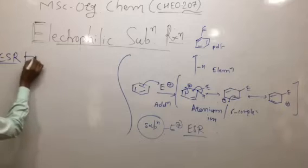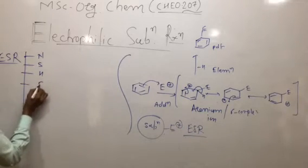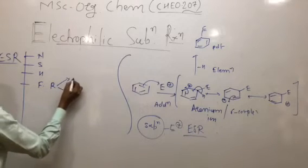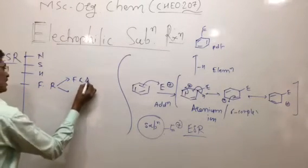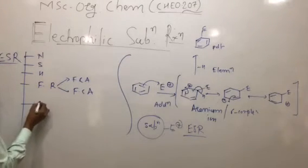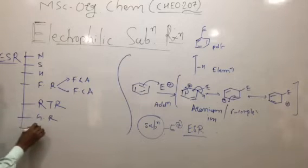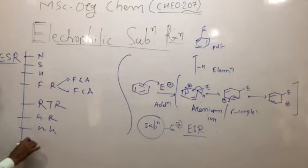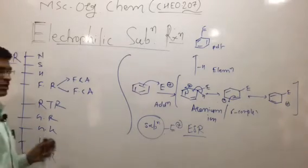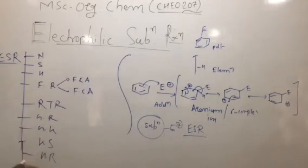The types of electrophilic substitution reactions include: nitration, sulfonation, halogenation, Friedel-Crafts alkylation, Friedel-Crafts acylation, Reimer-Tiemann reaction, Gattermann reaction, Gattermann-Koch reaction, Kolbe reaction, Kolbe-Schmitt reaction, Houben-Hoesch reaction, and Duff reaction. All these types of reactions are discussed as electrophilic substitution reactions on the aromatic nucleus.